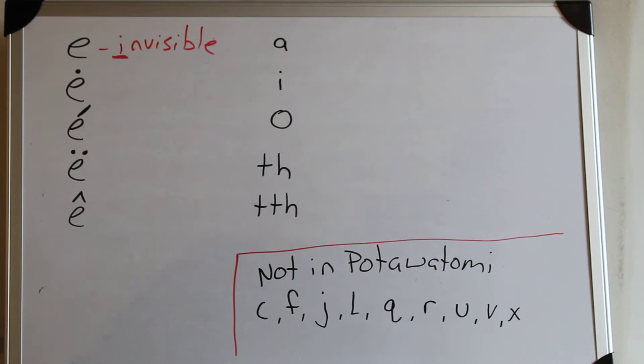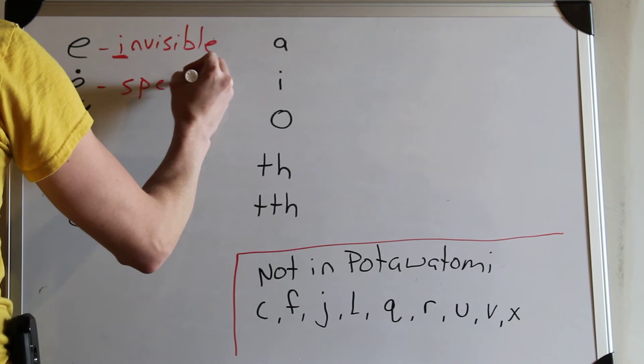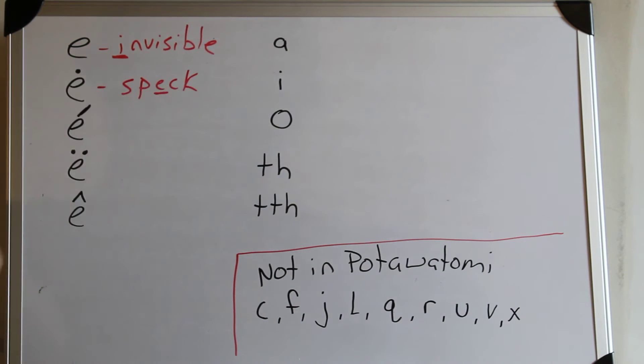The next E has one dot above it. So if you imagine that dot is a speck, the E in speck is this sound: eh, eh, eh, eh as in speck.